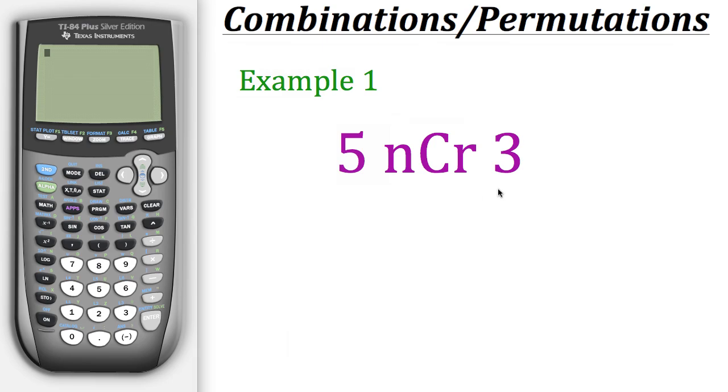It's going to look like this where n is representing the total number of items we have which is five and r represents the number of those items that we'll use which is three.